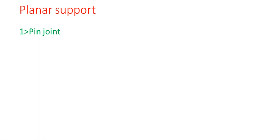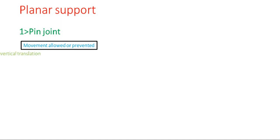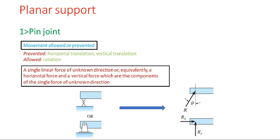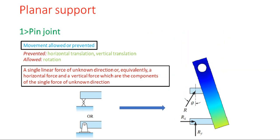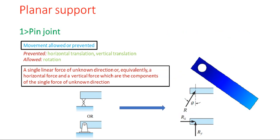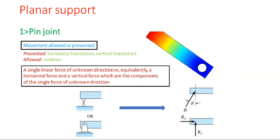A pin support can resist both vertical and horizontal forces but not a moment. It allows the structural member to rotate but not to translate in any direction. A pin connection can only allow rotation in one direction. The reaction forces you get are one horizontal force and one vertical force — or equivalently one resultant reaction force at some angle theta. From simulation, you can see how a pin joint behaves under loading conditions. A single pin connection is usually not sufficient to make a structure stable, so another support must be provided to prevent rotation.